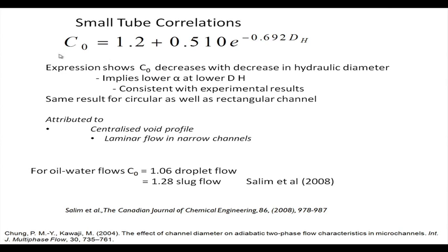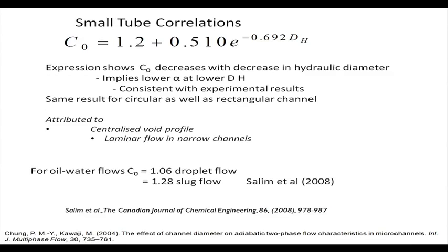The fact that C0 is lower at a lower dh can be attributed to two factors. First, there is a centralized void profile — voids tend to flow through the central region. Second, since there is laminar flow in narrow channels, this also gives us a lower α at a lower dh. For a lower hydraulic diameter the gas tends to flow through the central portion, and because it is laminar flow, α tends to be lower at lower dh — consistent with experimental results.